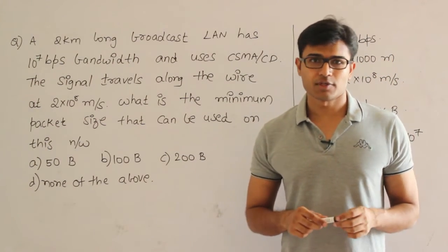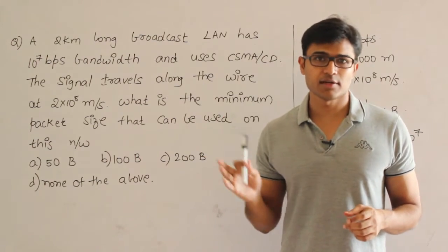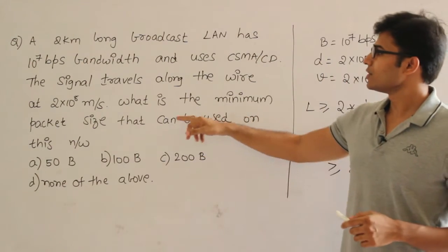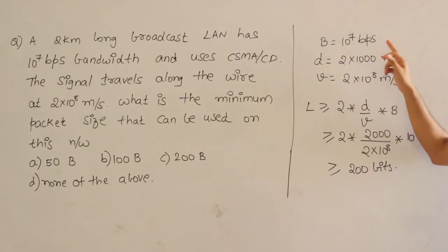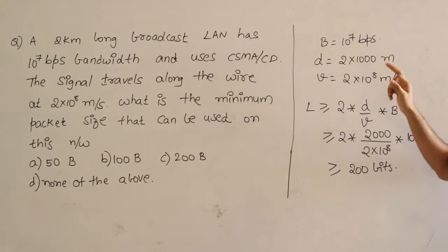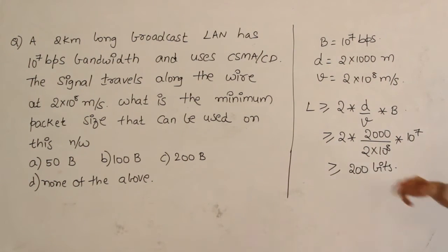Sometimes they might use 2.1, so if it is given as 2.1, take 2.1. What is the minimum size of the packet that can be used on this network? So bandwidth is 10^7 bits per second, distance is 2 kilometers, which is 2000 meters, and velocity is 2×10^8 meters per second.